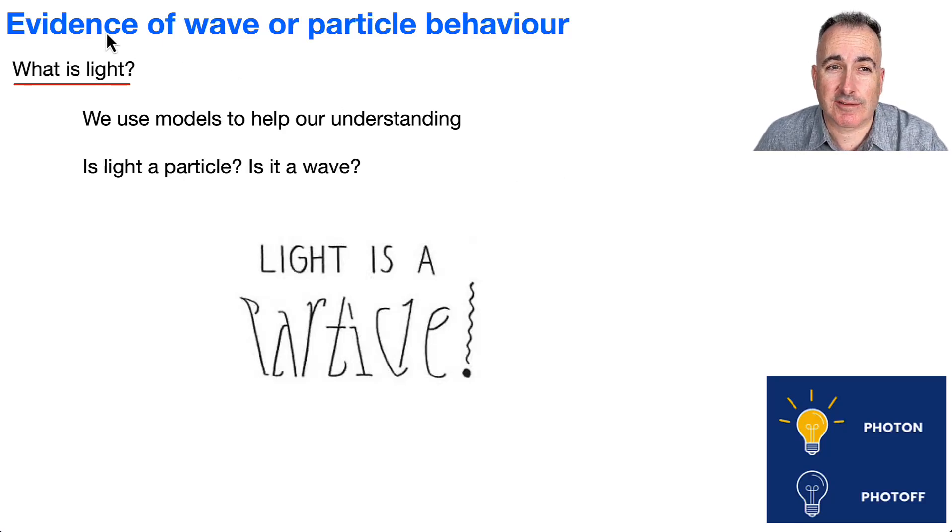We're going to look at the evidence for the wave or particle behavior. So first of all, I think it's important to think about this: what is light? It's such a simple question, and yet it's not so simple to answer. First, I'd like to point out that we use models to help in our understanding. That doesn't mean that our model is always right. Sometimes they just get us close-ish, or they allow us to understand things a little bit better, even though we might be limiting something. So the question is, is light a particle? Is it a wave?